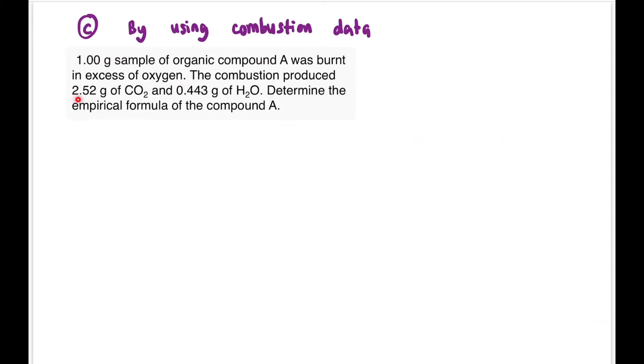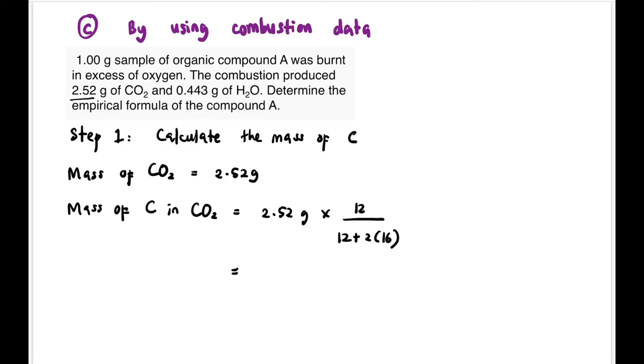Now let's look at the third case for combustion data. Usually questions will involve burning or combustion in excess oxygen. The first step is to calculate the mass of carbon. Mass of carbon can be obtained from the mass of CO2. The mass of CO2 from the question is 2.52 grams. So mass of carbon in the carbon dioxide is 2.52 grams times the mass ratio 12 (one carbon) divided by 44 (12 plus 2 times 16 for CO2). We get 0.6873 grams, that's the mass of carbon.